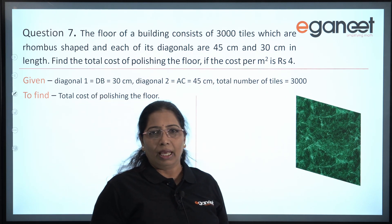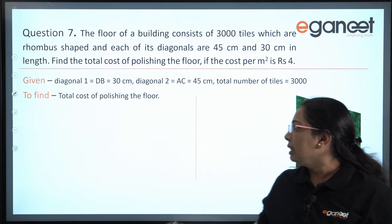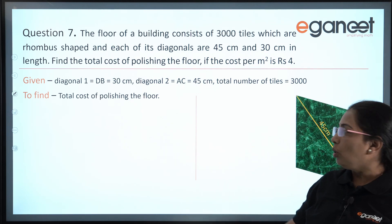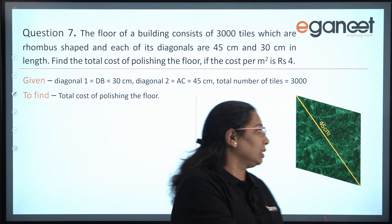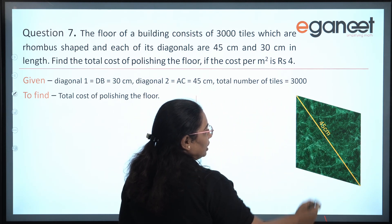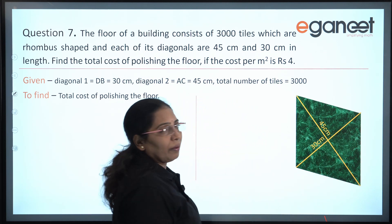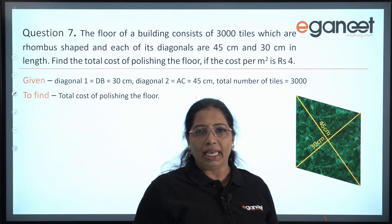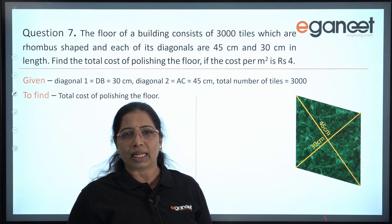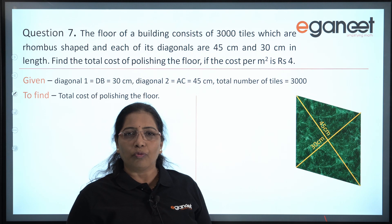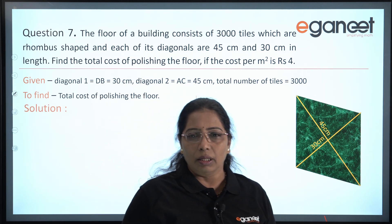Each tile is rhombus in shape. The two diagonals of the rhombus are given — one is 45 centimeters and another is 30 centimeters. Can we find out the area of this tile? Yes, we can, if we know the formula for the area of a rhombus.